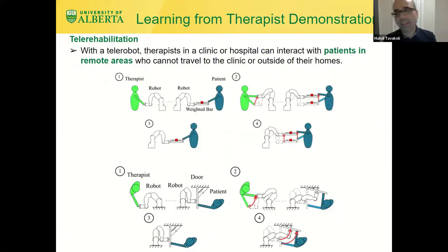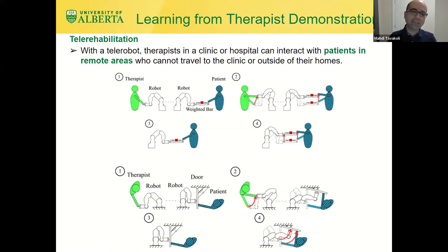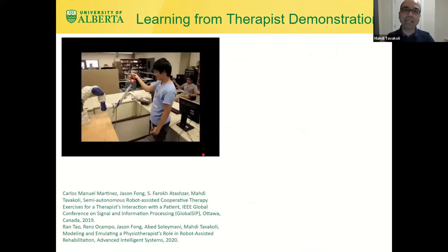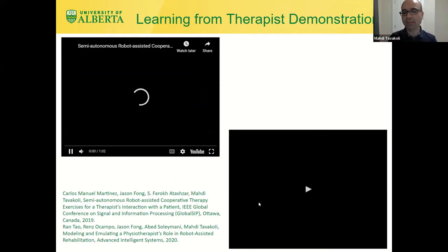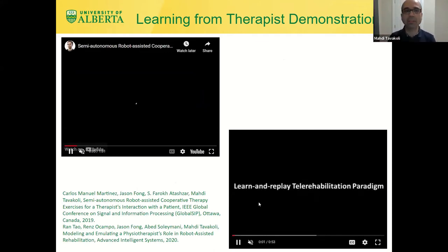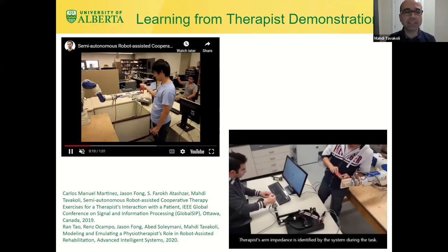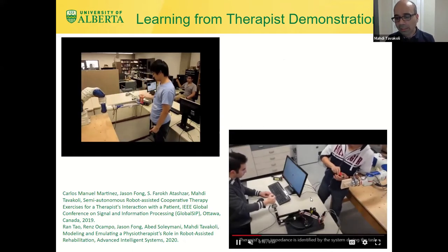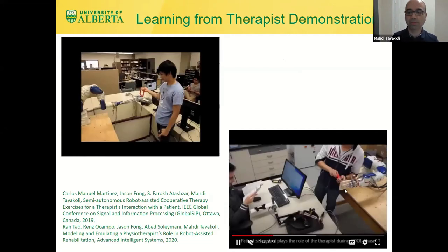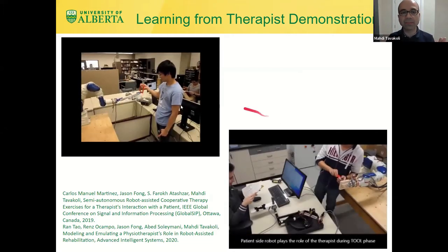You can use the same idea for tele-rehabilitation, where the patient and the therapist are not in the same location — maybe one is in the hospital and one is at home or in a rural community. They are engaging in an activity of daily living. The therapist can come in for some time, the machine learning learns that behavior and reproduces it. For instance, lifting the other side of a bar or keeping a piece of wood so the patient can drive a screw into it. The therapist is not needed once the demonstration is done.